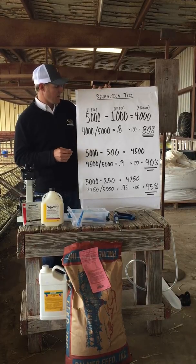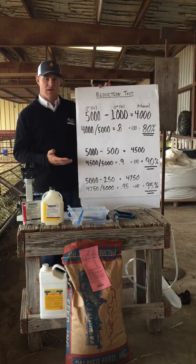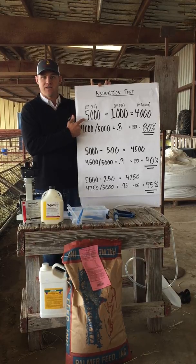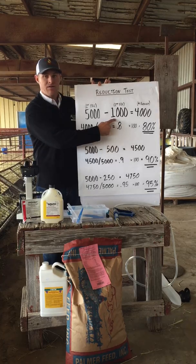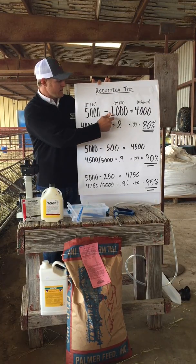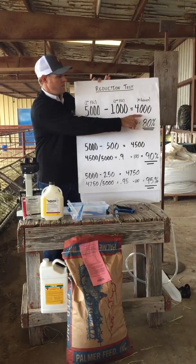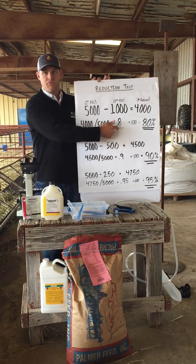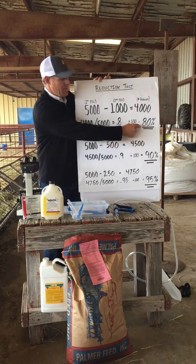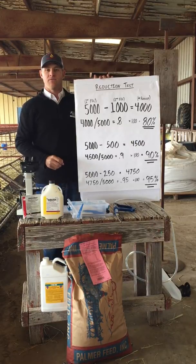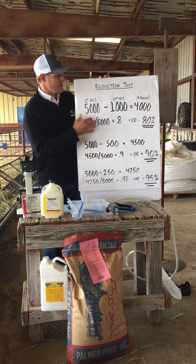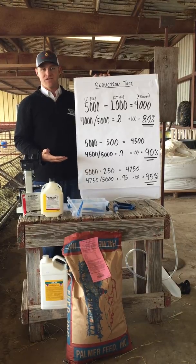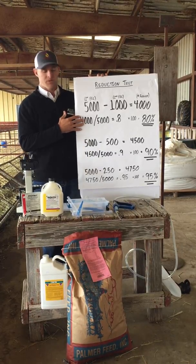Here is a theoretical example for a fecal egg count reduction test. A group of animals had an initial average parasite load of 5,000 eggs per gram. We treated them, came back 10 days later, and they averaged 1,000 eggs per gram. Subtract 1,000 from 5,000 to get 4,000. Divide 4,000 by the original 5,000 to get 0.8, then multiply by 100 — that gives an 80% effective kill rate. Eighty percent sounds good, but in reality we're on a slippery slope to resistance at that level.